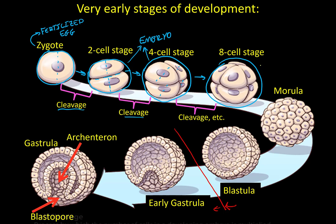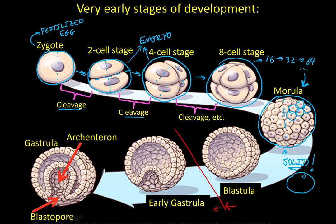This pattern continues — from 8 to 16 to 32 to 64 cells, on and on until you reach a solid large ball of tiny little cells called a morula. What's important to know is that it is solid: if you were to cut this morula in half and look inside, there would be no empty space, no gaps. That's a solid ball, and that's important to understand because it's going to change.